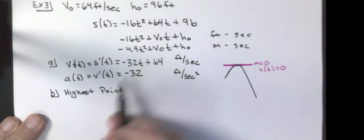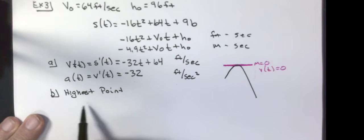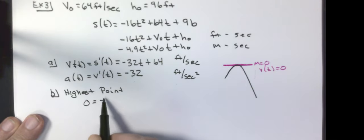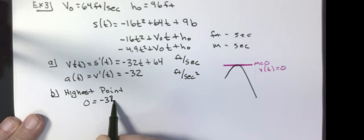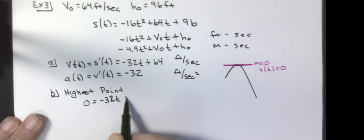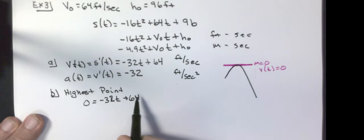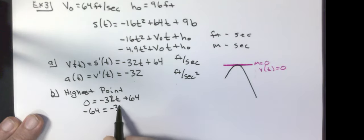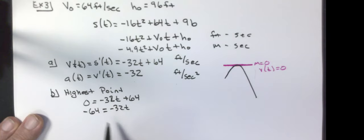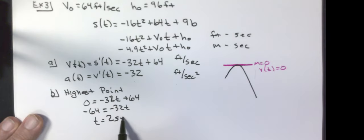So I'm going to set zero equal to negative 32T plus 64. Solving for T: subtract 64, divide by negative 32, and get T equals 2 seconds.